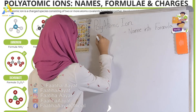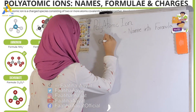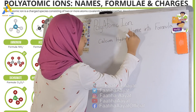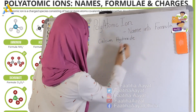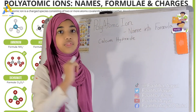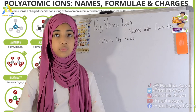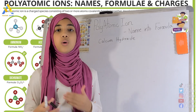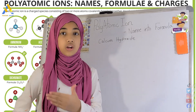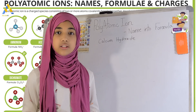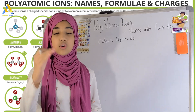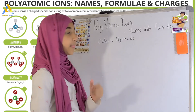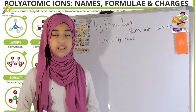Let me just write that down: calcium hydroxide. Now, we have to turn this name into the formula — we have to expand it and write it as the formula. Before we work through this together, I want you all to try it yourself. Pause this video and try it before I start explaining.